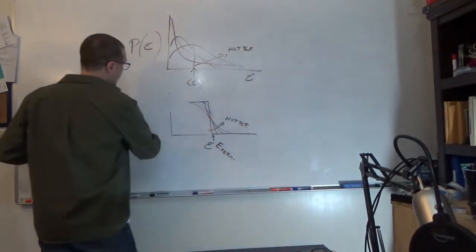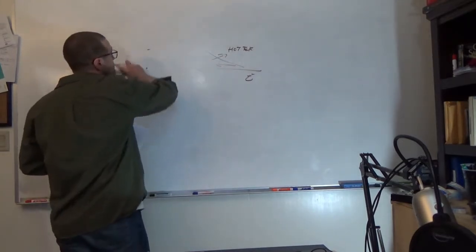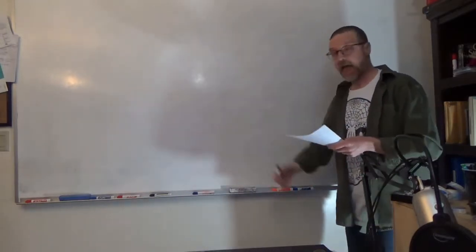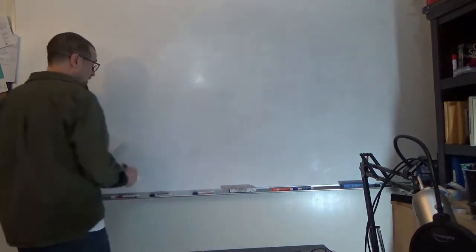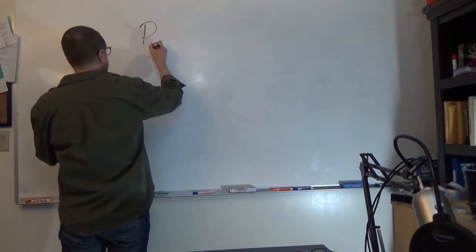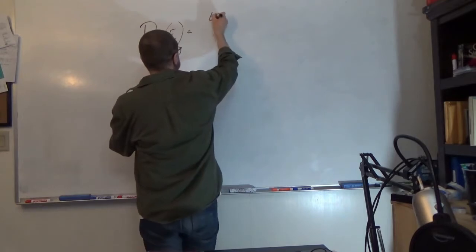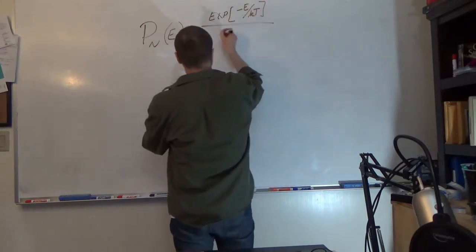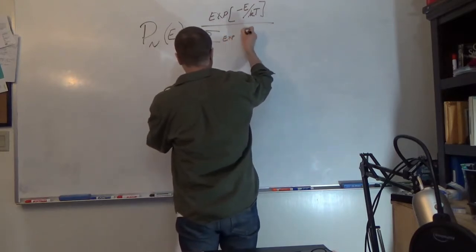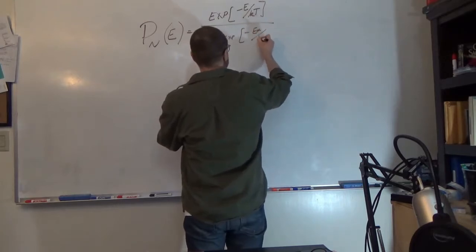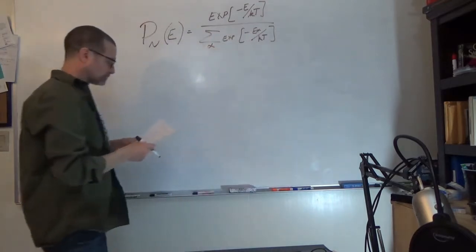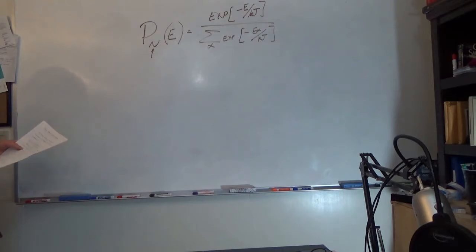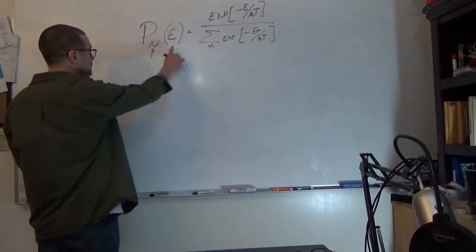Let's see how we can get to the Fermi-Dirac distribution starting from the Boltzmann distribution — the two are related, we just need to add in some extra rules. Starting with a canonical distribution: let's say we have n particles and we want to know the probability of finding a system with energy E.